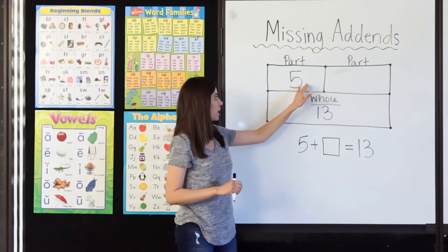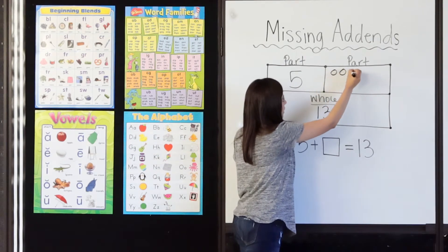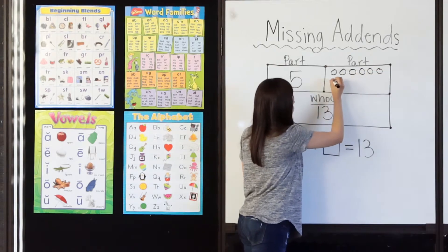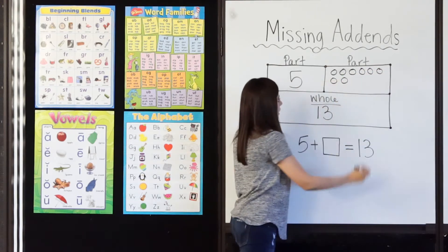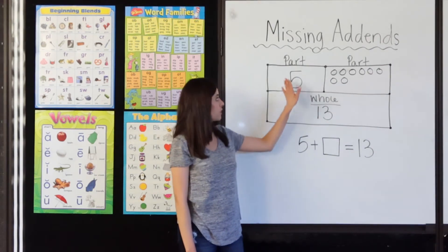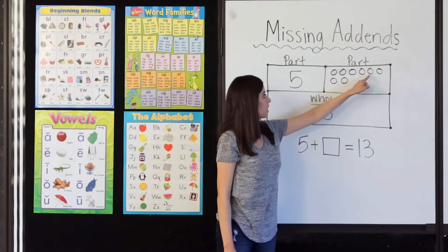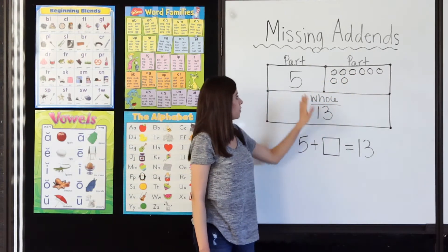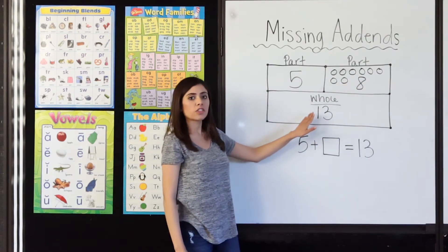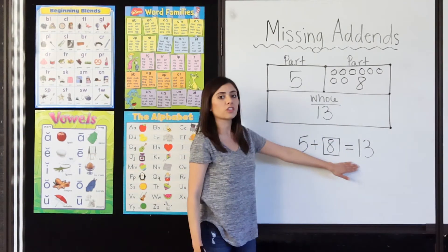Ready? 5, 6, 7, 8, 9, 10, 11, 12, 13. Okay, so how many circles did it take to get from 5 to 13? 1, 2, 3, 4, 5, 6, 7, 8. 5 plus 8 equals 13. 5 plus 8 equals 13. Very good.